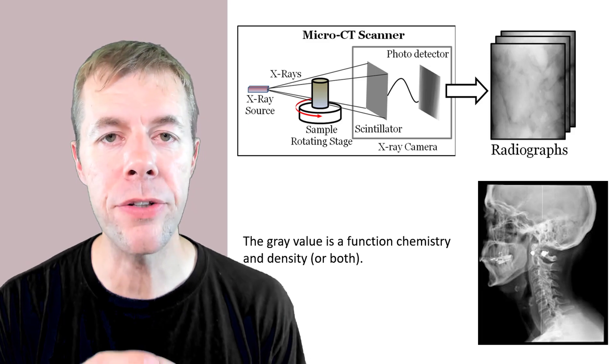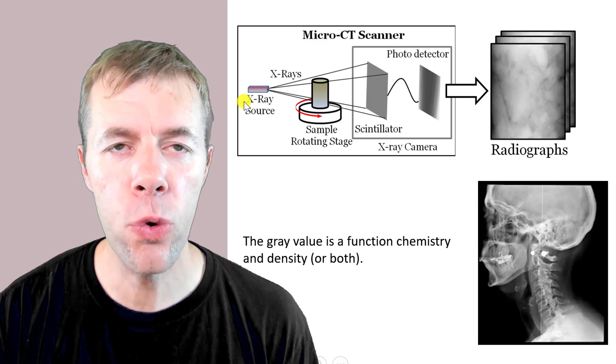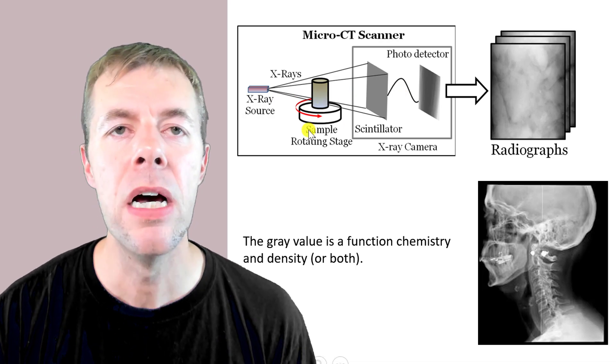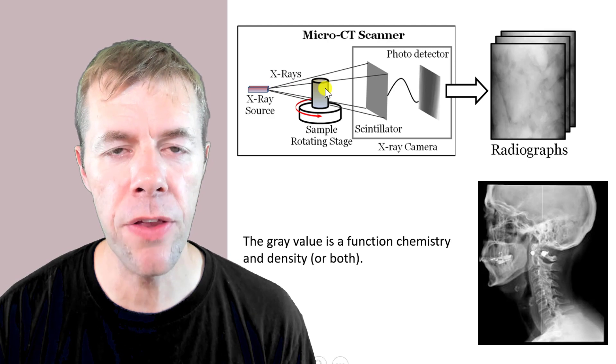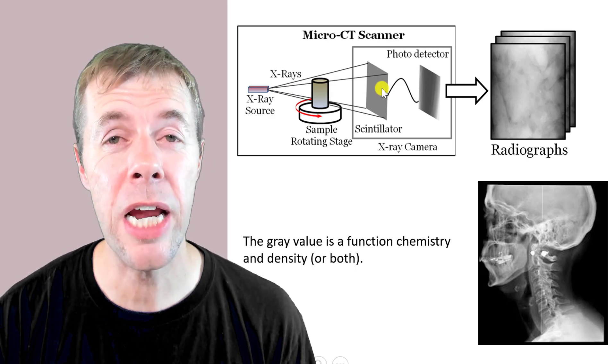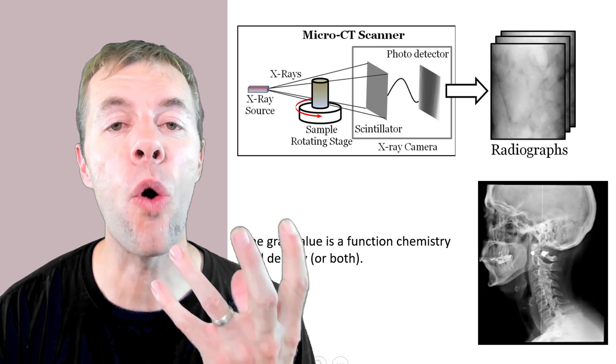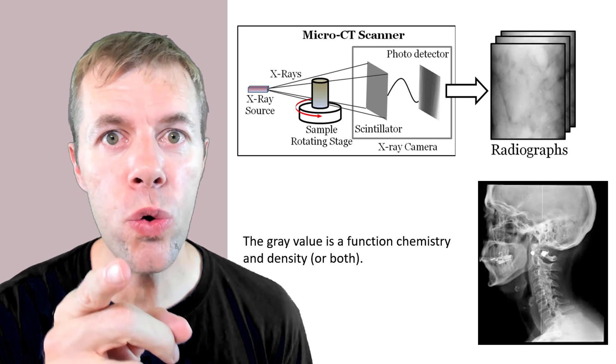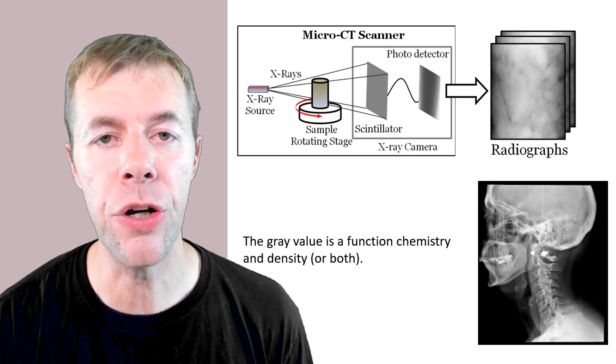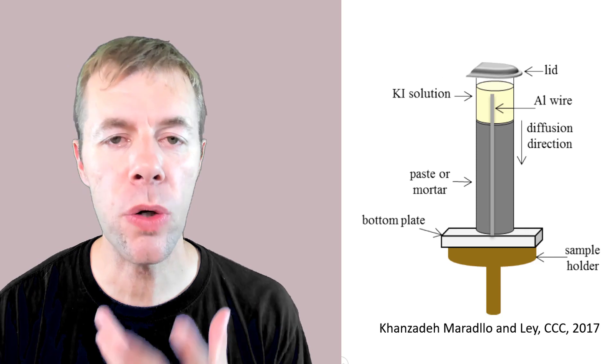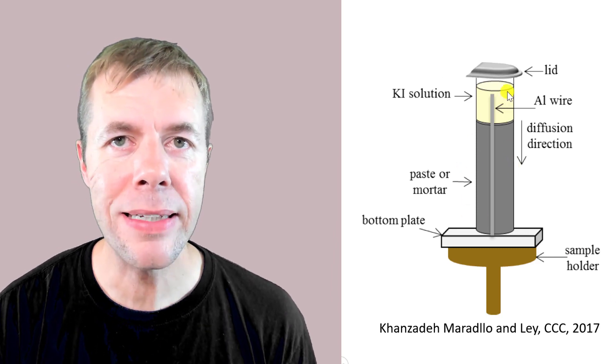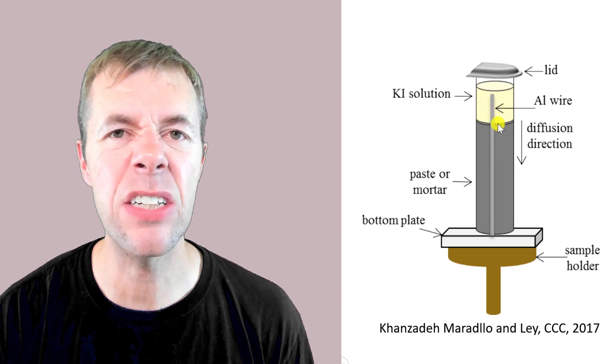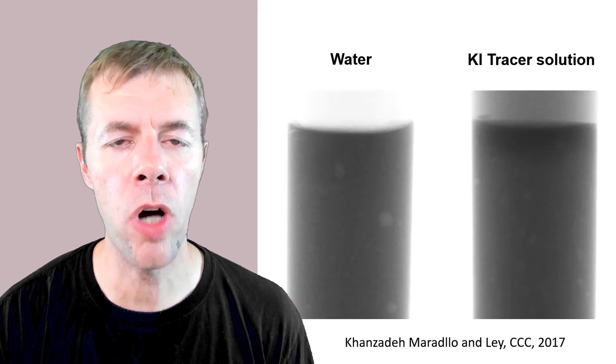To do that we're going to do an experiment where we're actually going to use x-rays to zap a sample and then take a picture of what makes it through to the other side. Some of these x-rays are going to be absorbed into the sample and some of them are going to make it through to the camera. And every one of these pictures is called a radiograph. If you have had an x-ray done to your body then you have had a radiograph done to you. Now in this picture here I'm showing a sample and it's got some solution on top of it. We're going to image it over time as this solution goes into the sample.